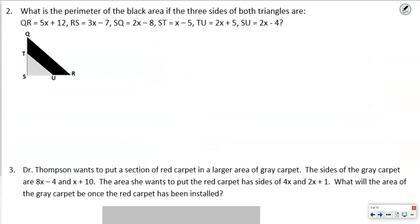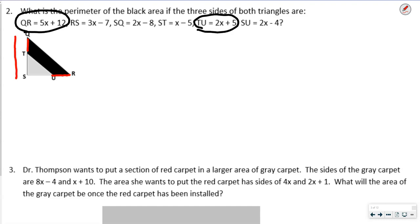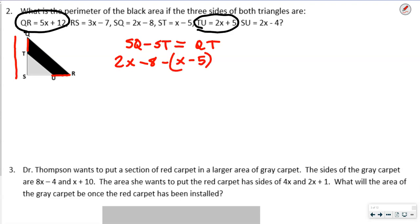The next question asks for the perimeter of the black area, given three sides of both triangles. We need to find QT and UR since those aren't listed. To find QT, we take the whole side QS and subtract TS from it. So: QS minus ST = (2X − 8) − (X − 5).